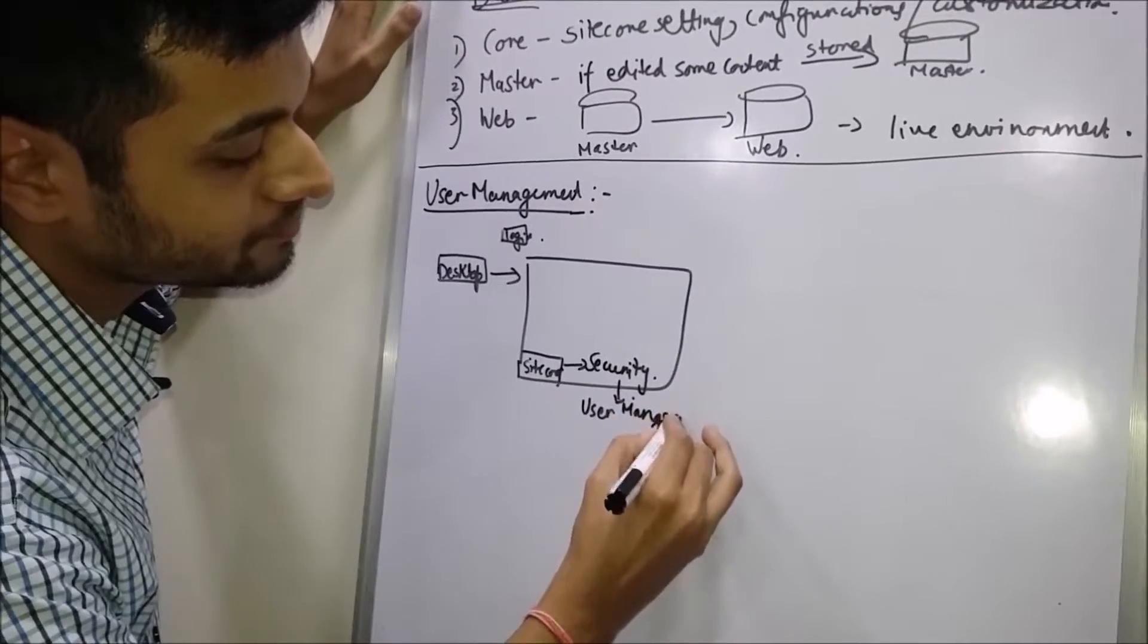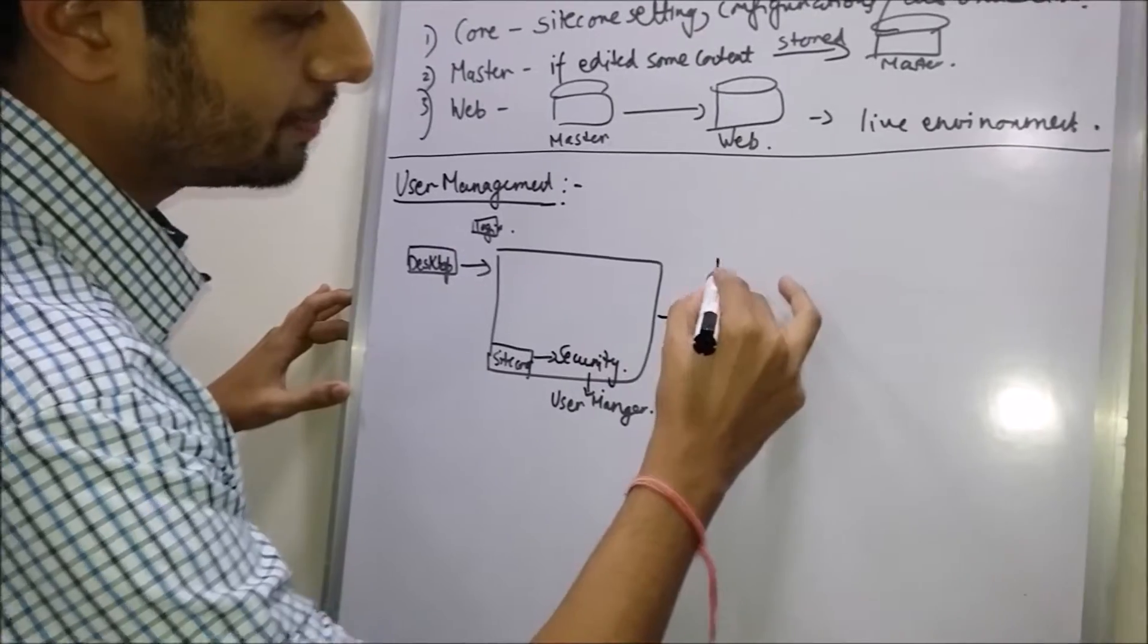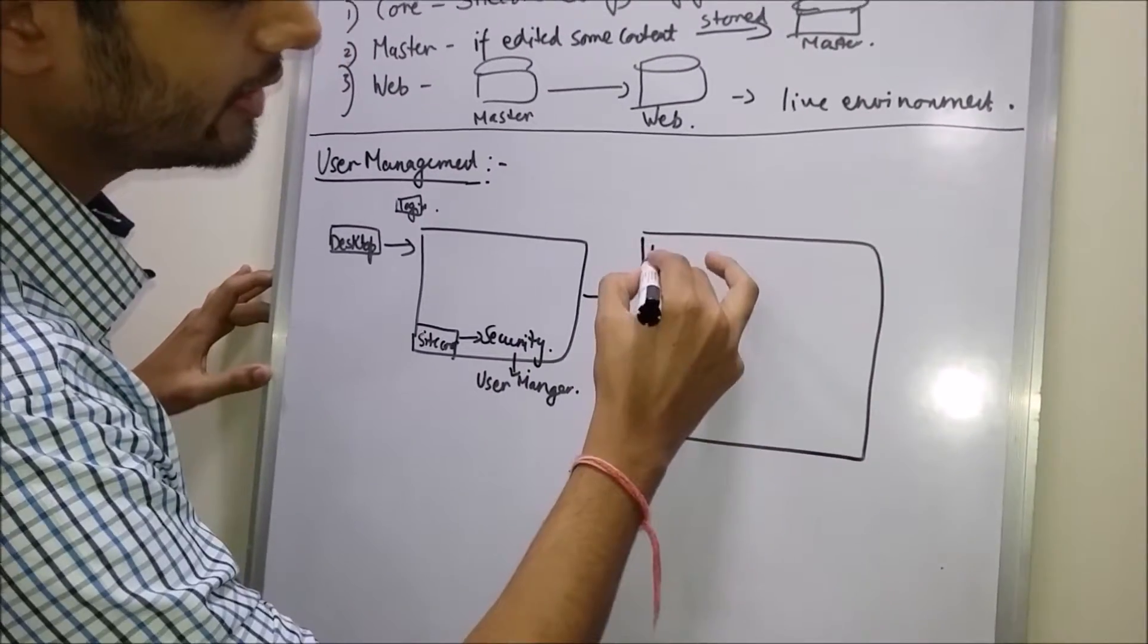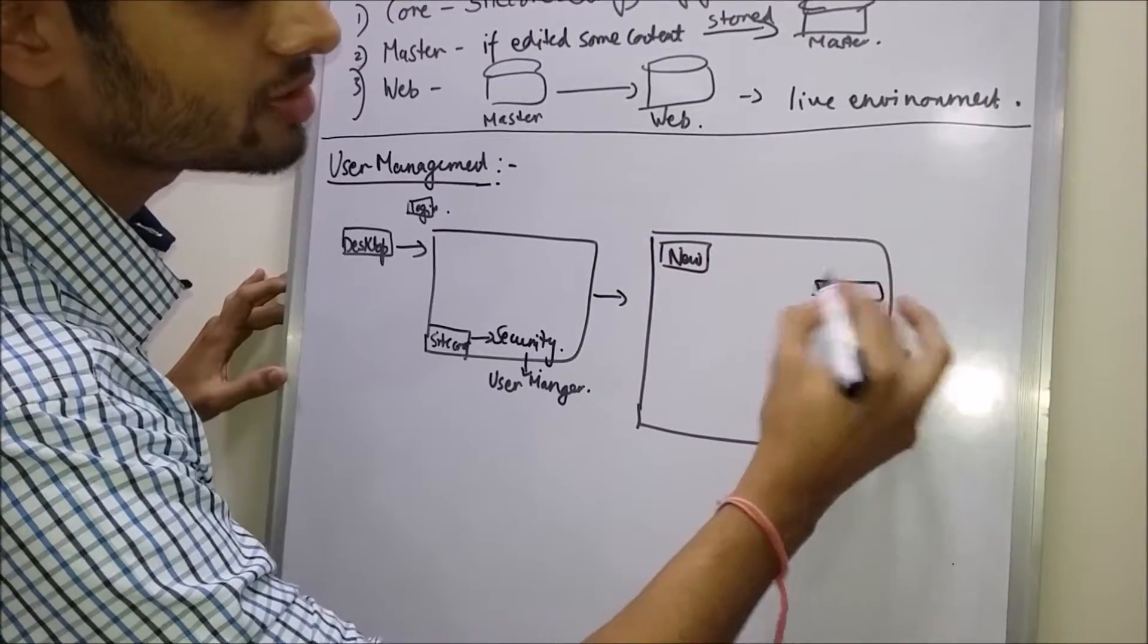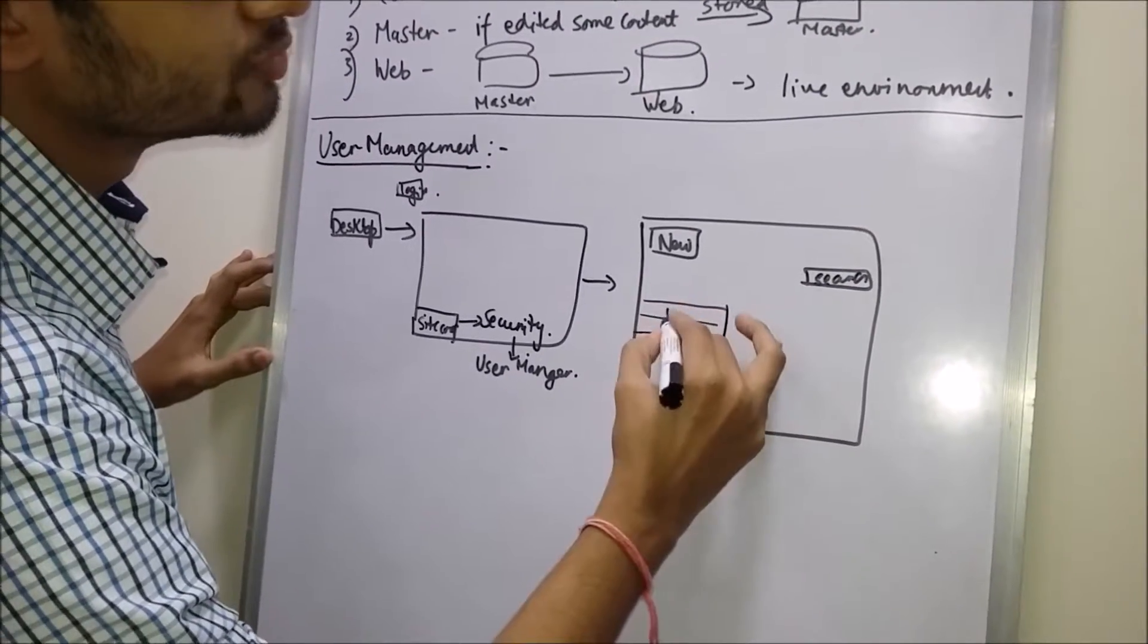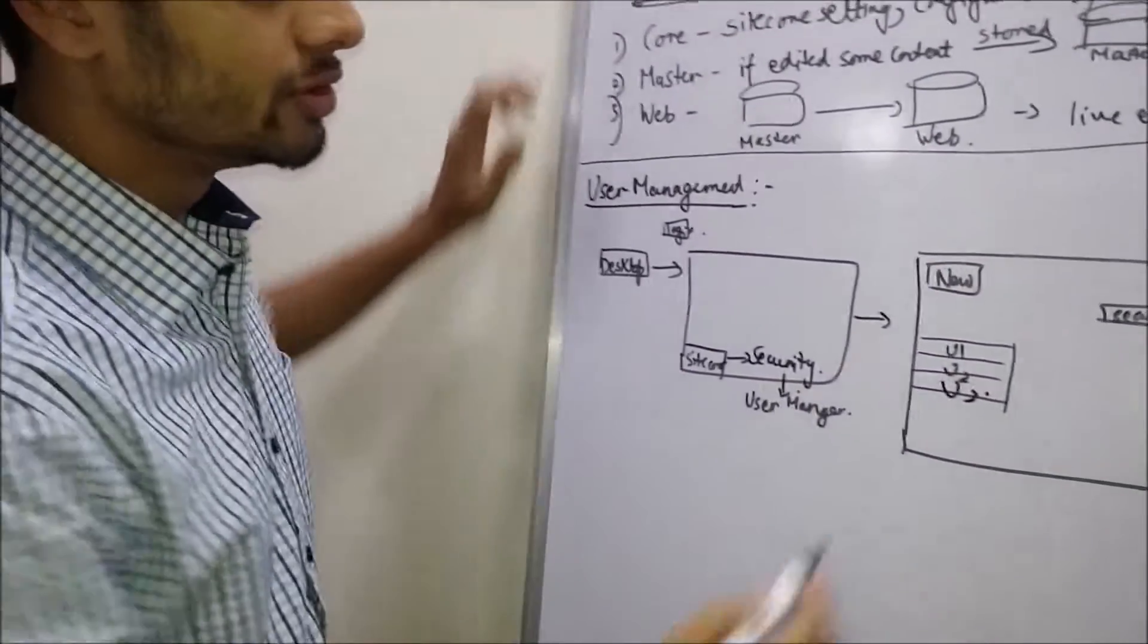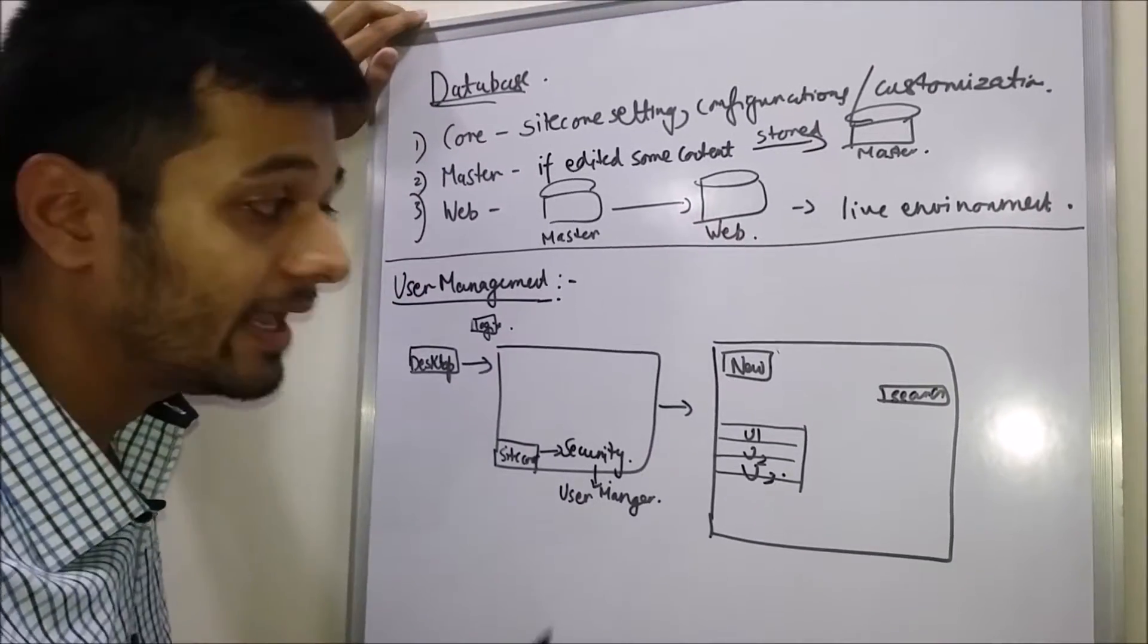So when you click on User Manager, a page opens up. Over here you can create users. There's a new button, search box. If you have already created some users, then it will be seen over here like User 1, User 2, User 3. If you want to create some new users, you just click on new, write down the username, and just click save. The new user will be created.